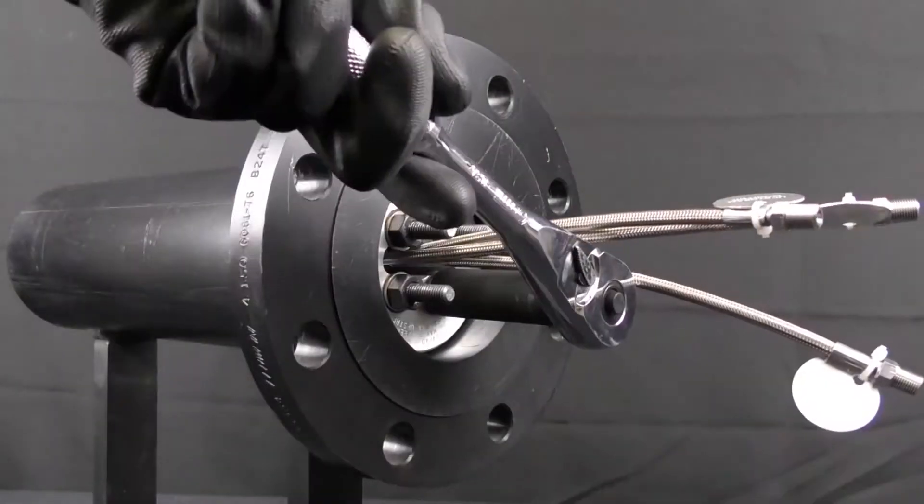Use the star pattern sequence to incrementally tighten the hex nuts to remove any slack from the parts.